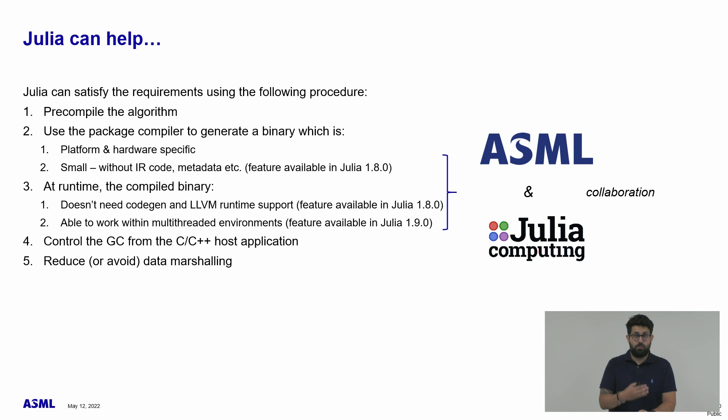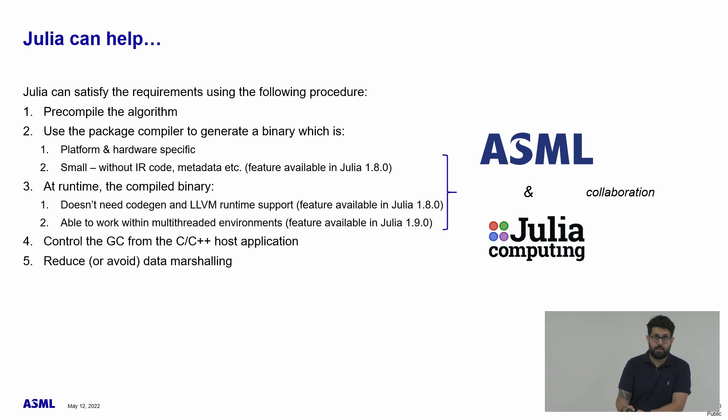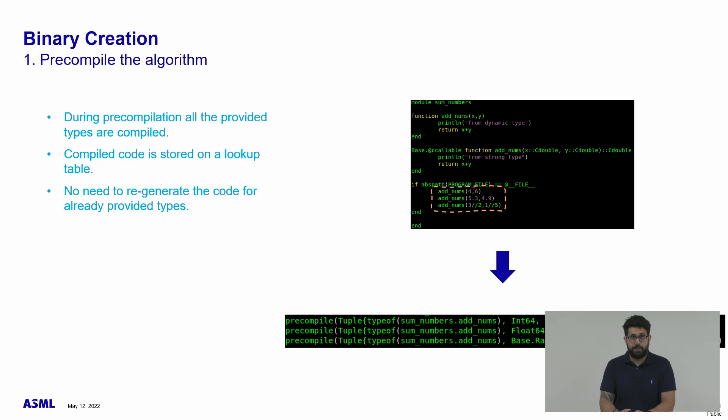Furthermore, we want to be able to control the action of the Julia garbage collector, and Julia already offers an API to control it. And lastly, we want to avoid data marshalling conversion, so we don't want the algorithm to accidentally copy data and perform accidental heap allocations.